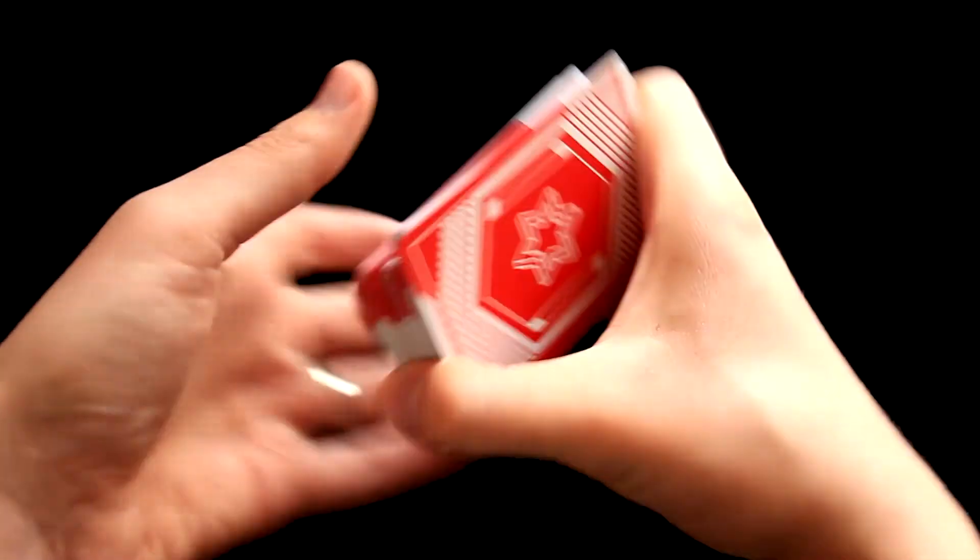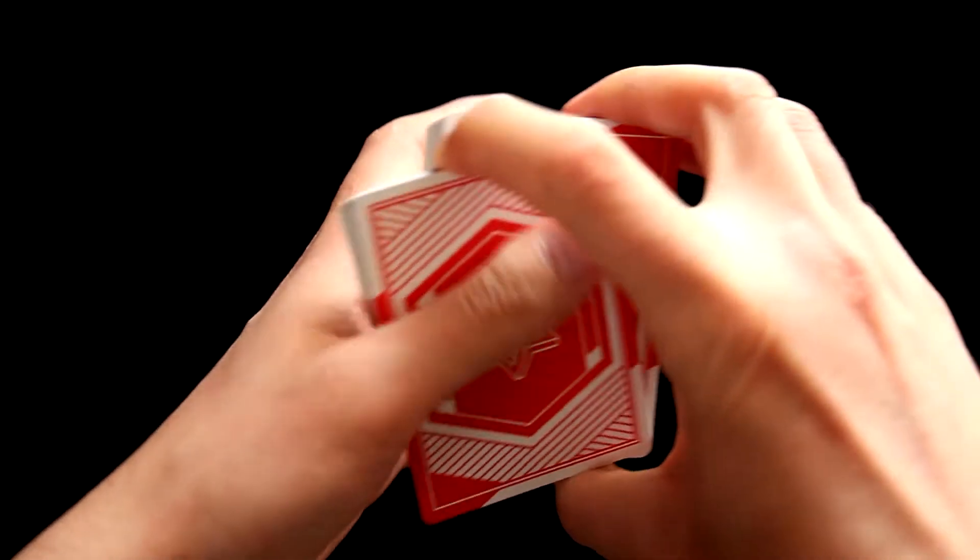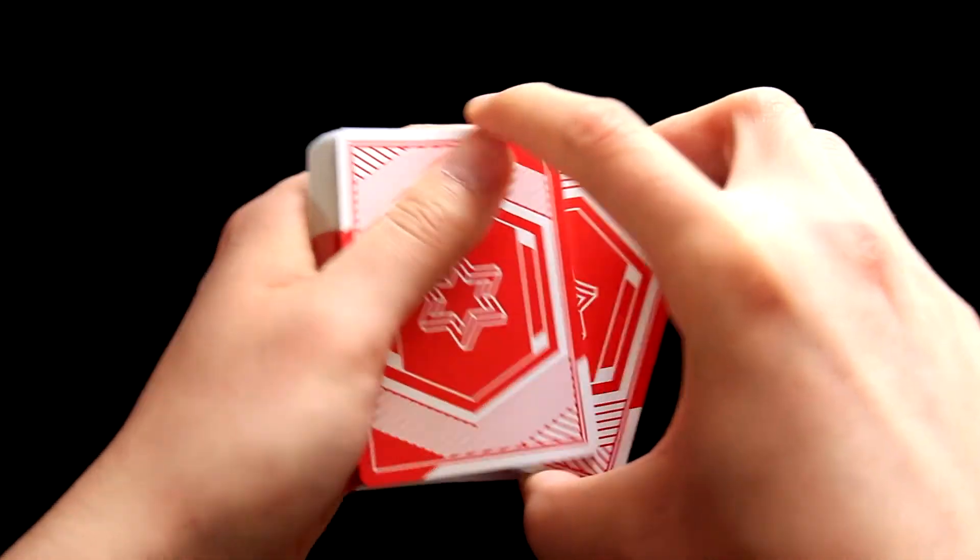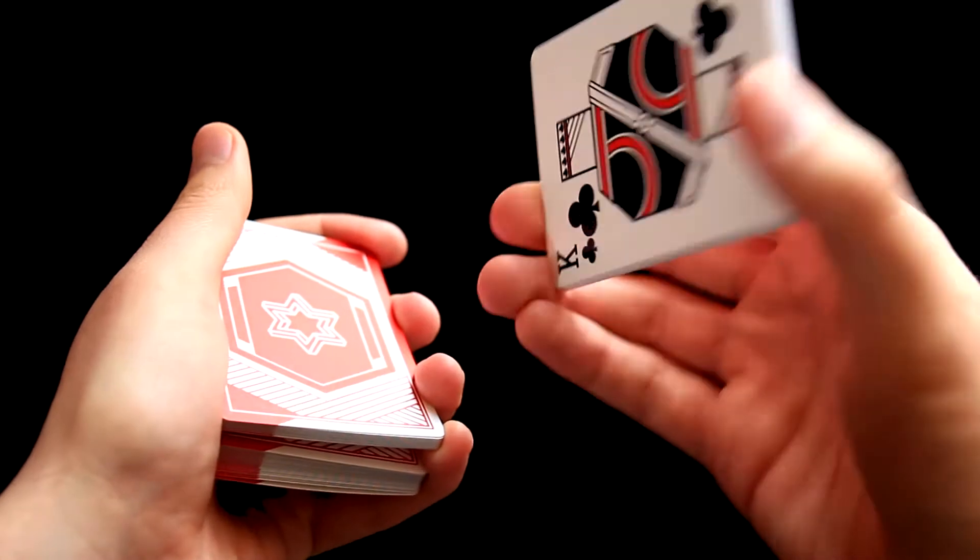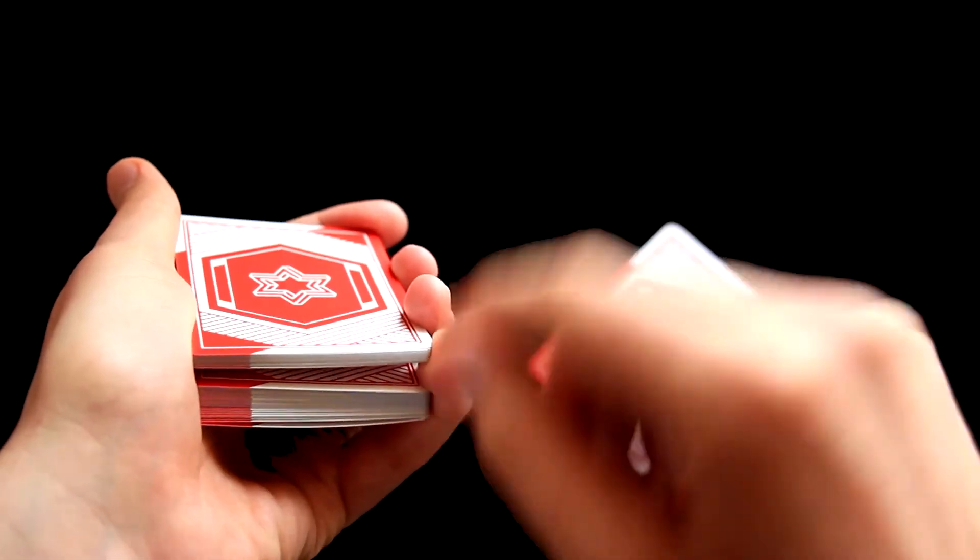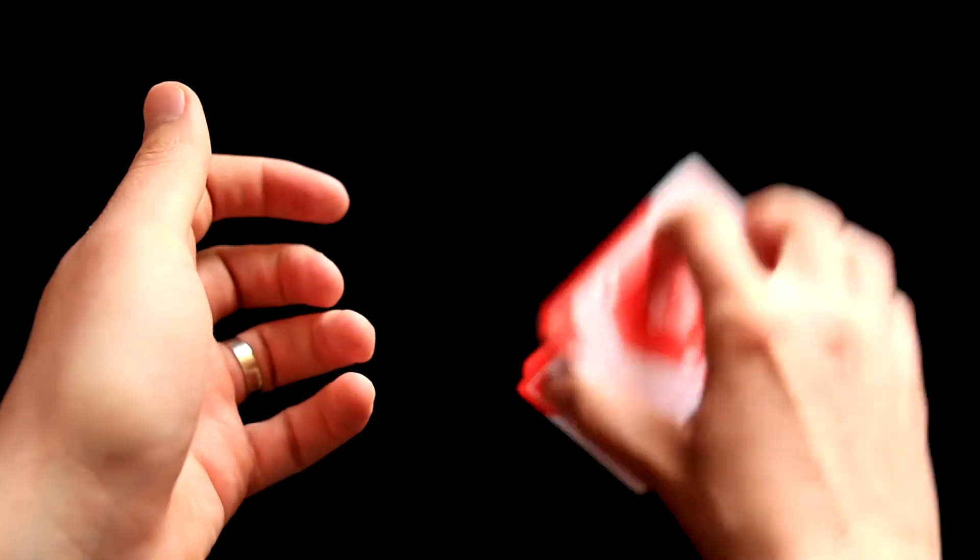And this is the basic false cut. So one more time: cut for the first time, cut for the second time, hold a break, place the cards you have left in your hand on the table, place everything above the break on the table as well, and the rest on top.